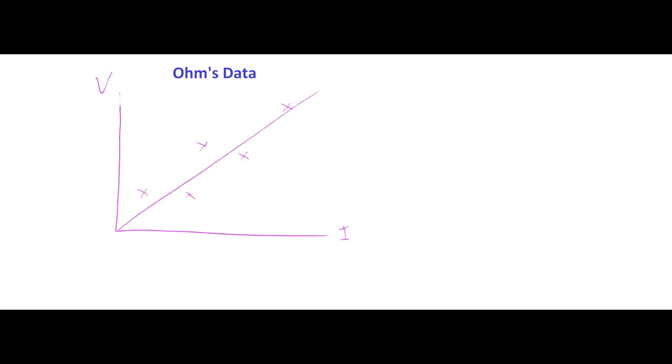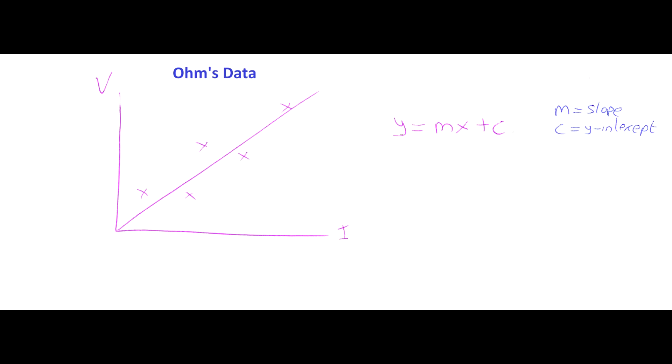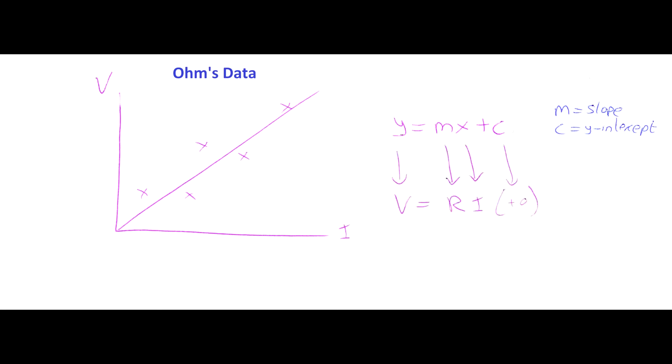For example, in 1826, Georg Ohm did an experiment with a circuit where he measured the current and voltage around a circuit for different lengths and thicknesses of wire. He plotted his results and discovered that voltage correlates with current in a nice, neat, straight line. From math class, an equation of a line is y = mx + c, where m is the gradient and c is the y-intercept. In this case, V = IR.